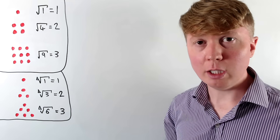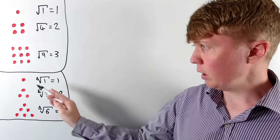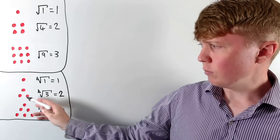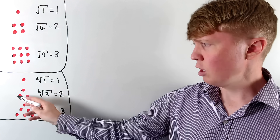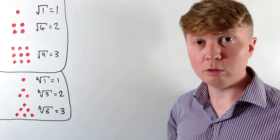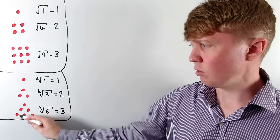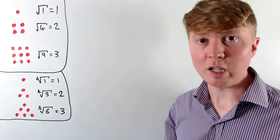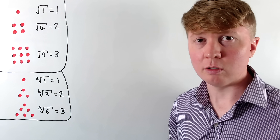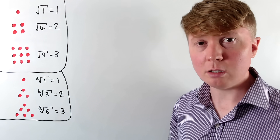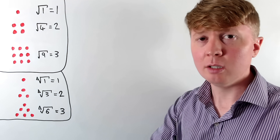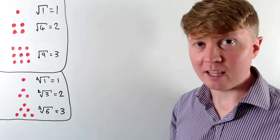We can do something very similar for triangular roots. The triangular root of 1 is just 1, the triangular root of 3 would be 2, because this is 2 dots wide and also 2 dots tall, and similarly the triangular root of 6 would be 3, because this is 3 dots wide, or you can think of it as 3 dots tall. So there's a lot of interesting structure we can uncover looking at triangular roots, and to get started we're going to look at the formula for the nth triangular number.